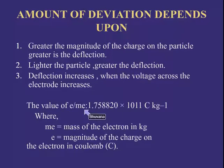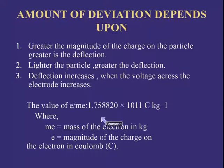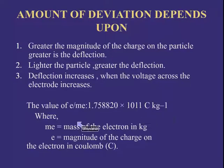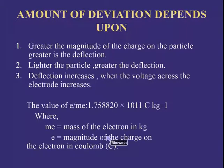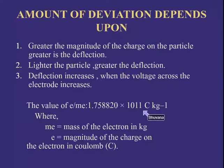Thomson concluded that the value of e/me — the charge-to-mass ratio of the electron — is 1.758820 × 10¹¹ coulombs per kg, where me is the mass of the electron in kg and e is the magnitude of the charge on the electron in coulombs.